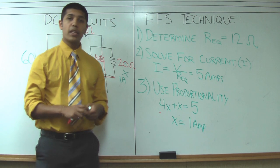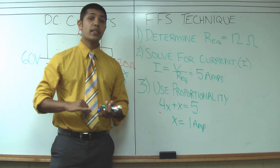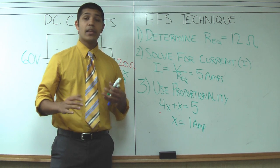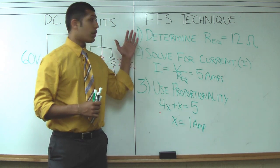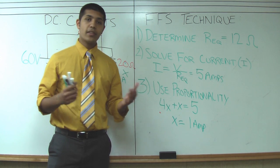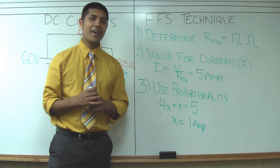Now once we determine this we can go further and solve for voltage drops across the resistor. We can solve for the power dissipated through each resistor. There's a lot of things we can do but we really need to master the first three steps. Alright, once you master these come back and visit our website for more tips. Alright guys, have a good day. Bye.